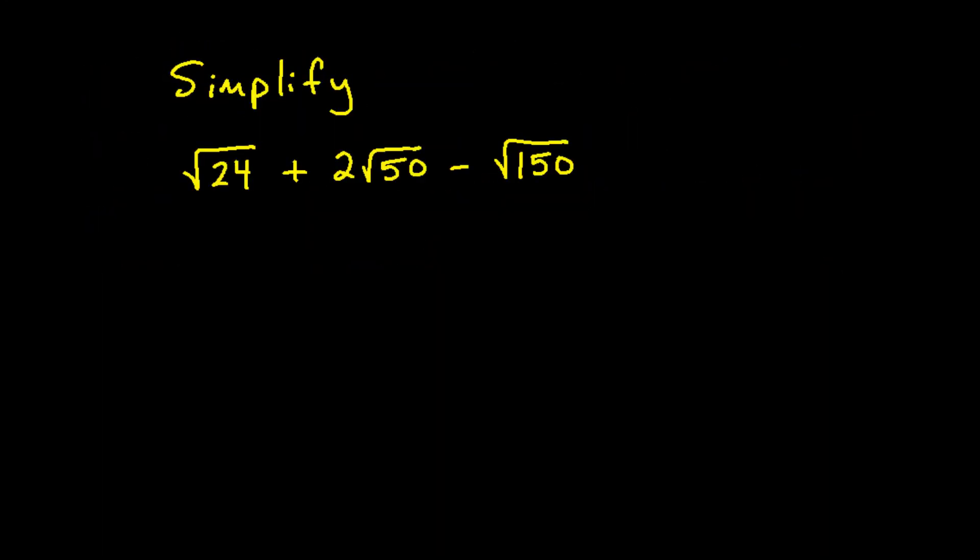This next question involves simplifying the radical expression square root of 24 plus 2 times square root of 50 minus square root of 150. In order to add and subtract radicals we need the same number under the radicand, which in this case is a square root. We need the same number under the square root to combine them. We will first work on simplifying each square root.